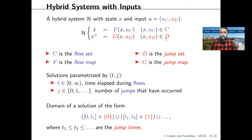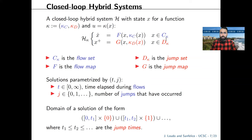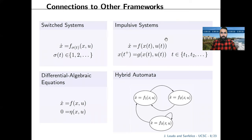We are interested in the case in which the hybrid equations are defined in terms of an input. This input is hybrid as well: the differential equation depends on the continuous element uc, while the difference equation depends on the discrete input ud. When this input is assigned by a feedback law, we obtain the resulting closed loop system in which the flow map, flow set, and jump set are defined in terms of the state space. This type of modeling is convenient for switched systems, impulsive systems, differential algebraic equations, and hybrid automata.